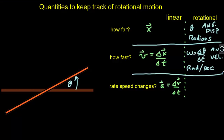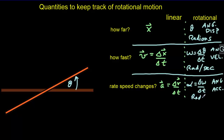Then we need a third quantity to keep track of how fast the rotational rate is changing. We use alpha to represent that — it's called the angular acceleration — and it equals the rate of change of angular velocity. Its units are radians per second per second, or radians per second squared.